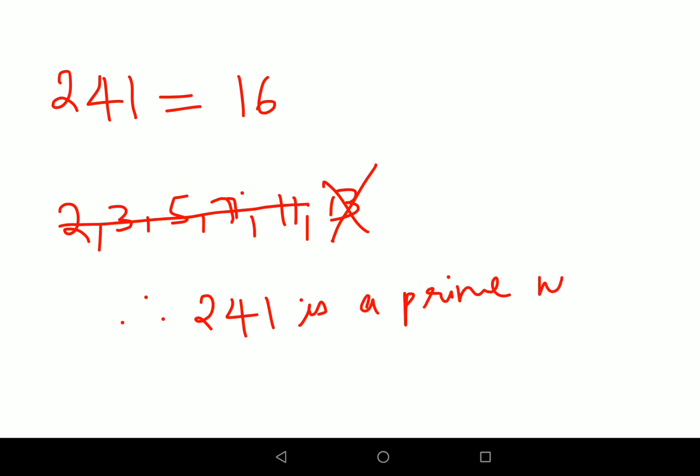241. Again, 241 is very close to 256, which is 16 square, so we'll write all the prime numbers up to 16: 2, 3, 5, 7, 11, and 13. If you see closely, this is not getting divided by all of these, neither is it getting divided by 13 as well. Therefore 241 is a prime number.